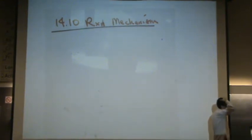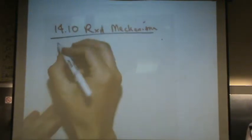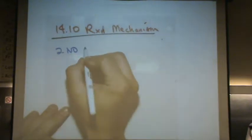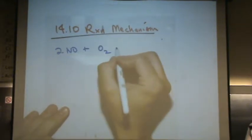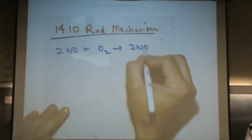Reaction mechanisms can get a little complicated. Let me show you an example here of just a sample reaction. Let's say we have 2NO plus an O2 goes to 2NO2.